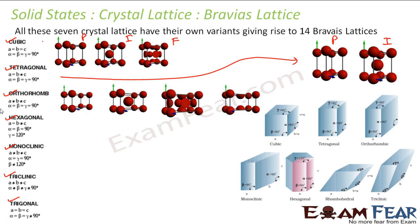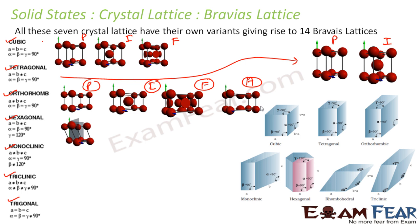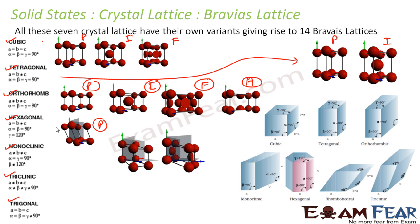For orthorhombic, all four types were possible: primitive, body centered, face centered, and base centered — A, B, or C. For hexagonal, he found that only primitive was possible based on his experiments. Mathematically, you can prove this because if this is my R, it is not possible to fit atoms in the other arrangements.